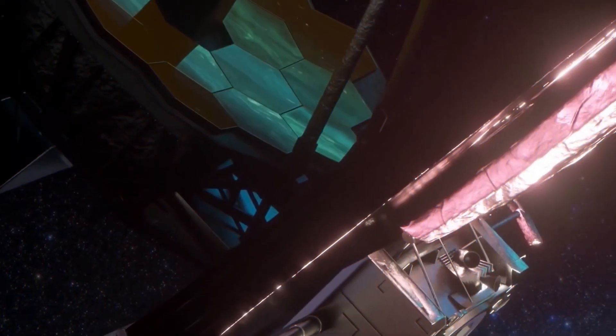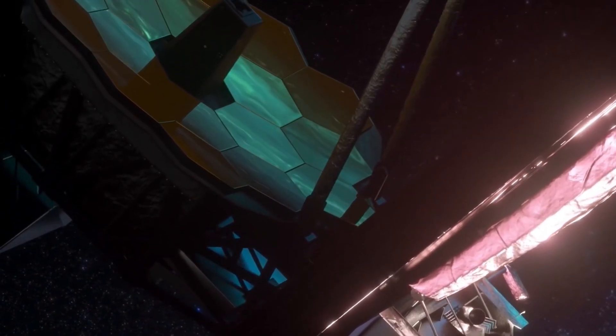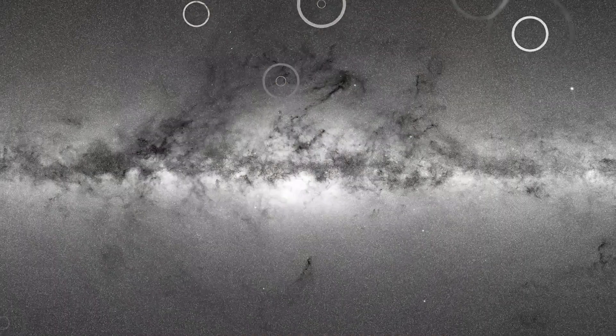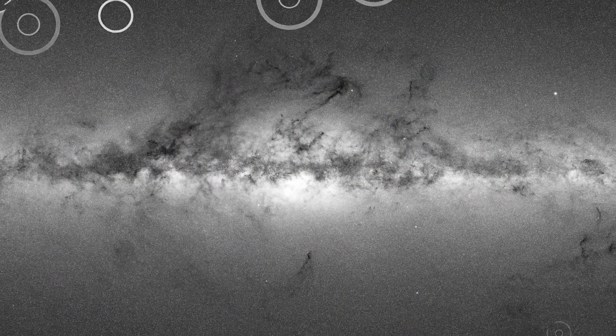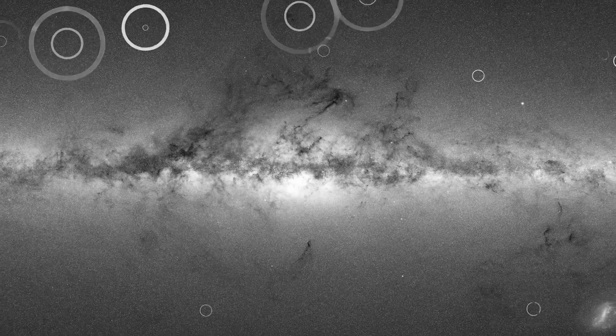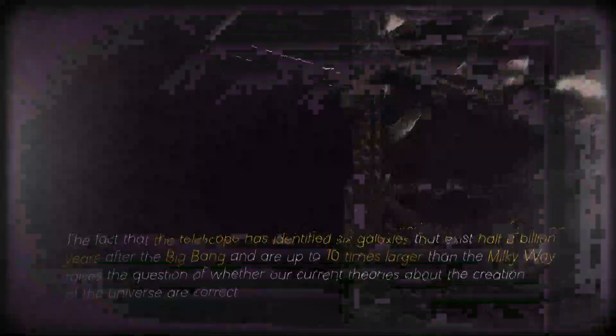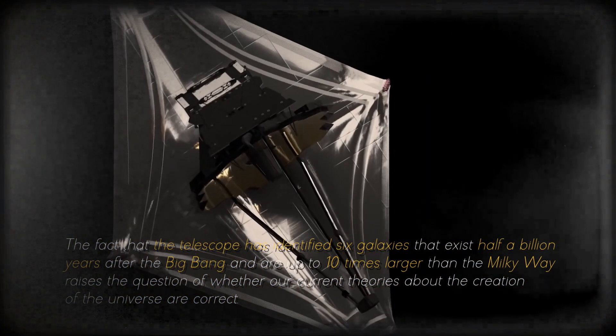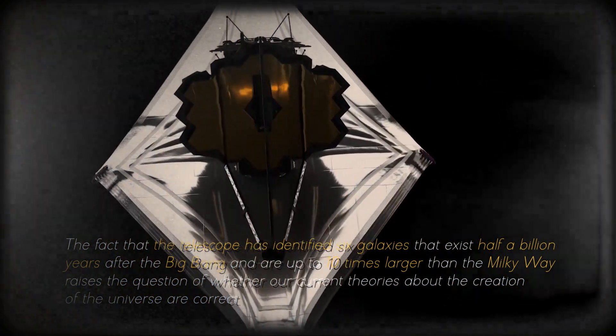According to theoretical physicist Michio Kaku, the discovery of ancient galaxies by the James Webb Space Telescope is called into question everything we knew about the beginning of the universe. Previously, these galaxies were thought to be less developed than the Milky Way, but the new findings suggest that we may be missing crucial information. The fact that the telescope has identified six galaxies that exist half a billion years after the Big Bang and are up to ten times larger than the Milky Way raises the question of whether our current theories about the creation of the universe are correct.